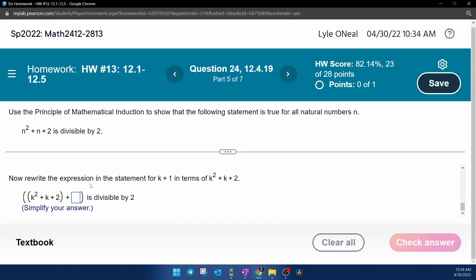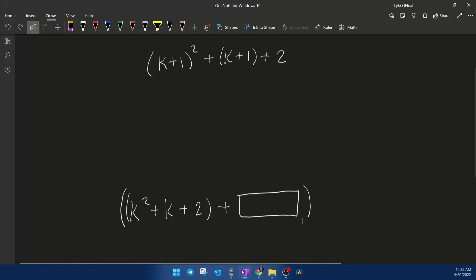And then it says now rewrite the expression in the statement for k plus 1 in terms of, and somehow we're going to have to end up with this as one of the terms. So now we need to go back to the scratch work and do some simplification to see if we can come up with this format that they want. All right, so again in our scratch work, this is where we're at.